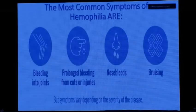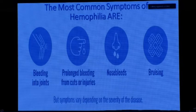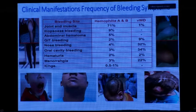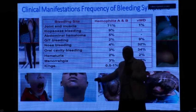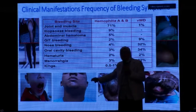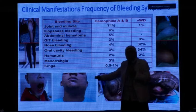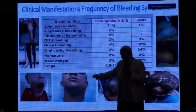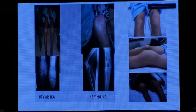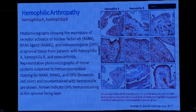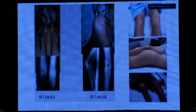The most common symptoms of hemophilia include bleeding into joints, prolonged bleeding from cuts or injuries, nosebleeds, and bruising — these bleeding manifestations are present in similar percentages in both types. This case is an 18-year-old from a rural governorate who underwent dental extraction without preparation and developed a massive neck and throat hematoma leading to near-suffocation.